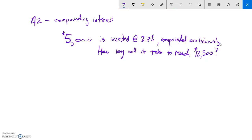This is Algebra 2, Topic 13. I have a problem I want to solve. I've got $5,000 invested at 2.7% compounded continuously. How long will it take to reach $12,500?